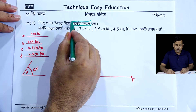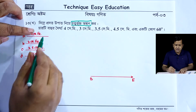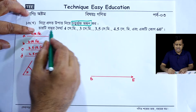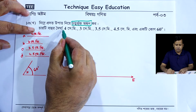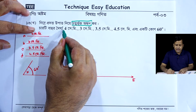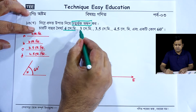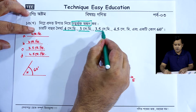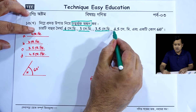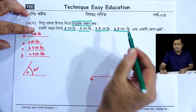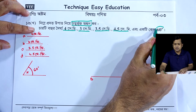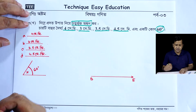The technique is: 4 cm, 3 cm, 3.5 cm, 4.5 cm, and 1 is 60 degrees.